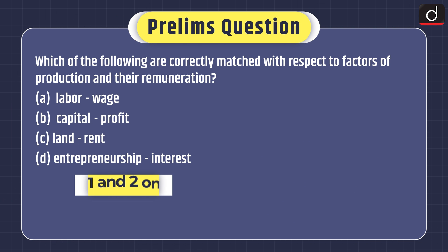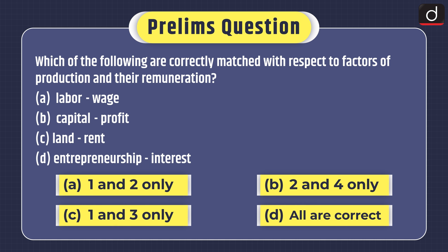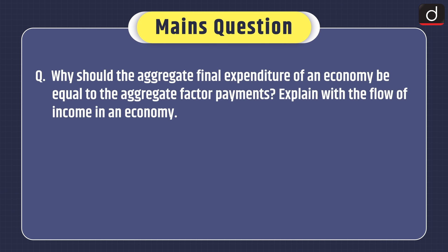Now moving on to the practice questions. First, a prelims question: which of the following are correctly matched with respect to factors of production and their remuneration? 1. Labor – wage. 2. Capital – profit. 3. Land – rent. 4. Entrepreneurship – interest. Select the correct code: 1 and 2 only, 2 and 4 only, 1 and 3 only, or all are correct. You can send the answer of this question in the comment section. Now moving on to the main question: why should the aggregate final expenditure of an economy be equal to the aggregate factor payments? Explain with the flow of income in an economy.